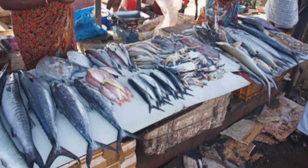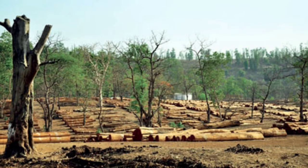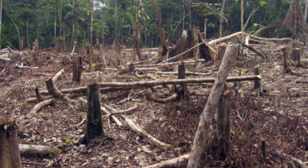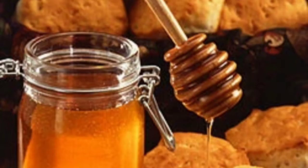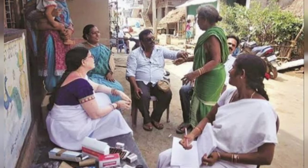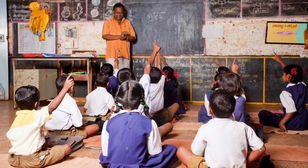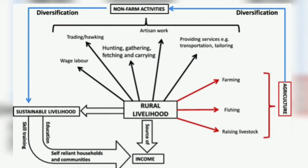People in rural areas also depend upon the sale of forest wealth for additional income, like collection of mahua, honey and herbs. People pursuing different professions like doctors, nurses and teachers are also found in the village community, who earn their income through their services. Thus, in a village, both farming and non-farming activities form a source of income.